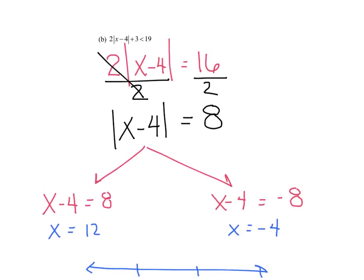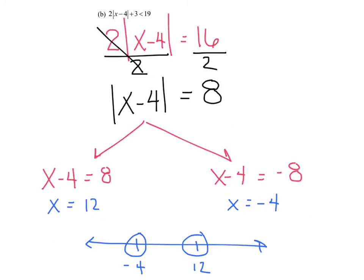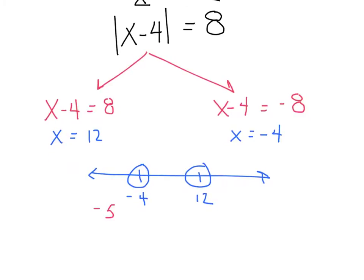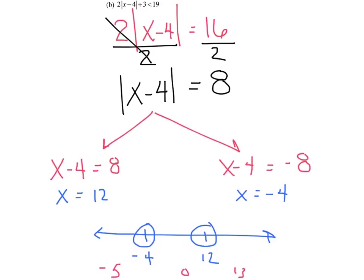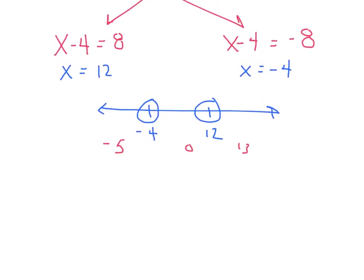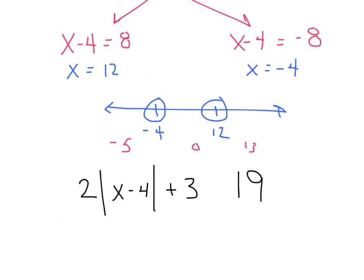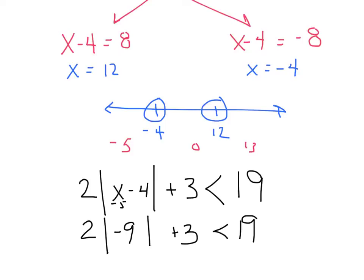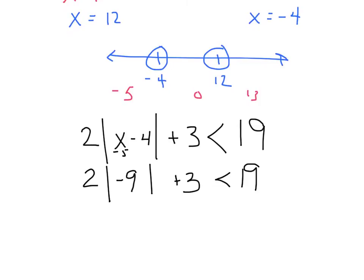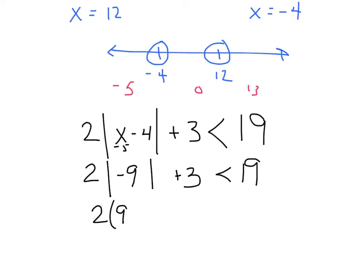Looking back at the original, it was a strict less than, so open circles at negative four and twelve. Test points: negative five, zero, and thirteen. Plugging negative five into the original — two times the absolute value of negative five minus four plus three is less than nineteen: that's two times nine plus three equals twenty-one, and twenty-one is less than nineteen — false.